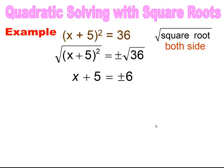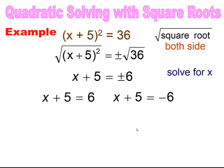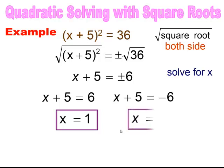So I have x plus 5 equal to positive 6 or negative 6. Because we want to know what x is, I need to continue solving until x is by itself. I have x plus 5 equals positive 6, and x plus 5 equals negative 6. Subtracting 5 from both, I get x equals 1, and x equals negative 11. So again, we have two separate solutions for x.